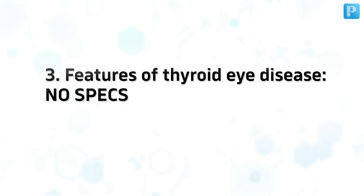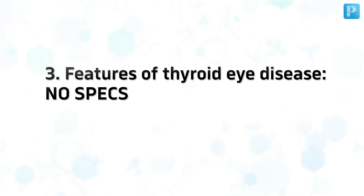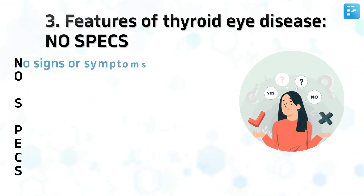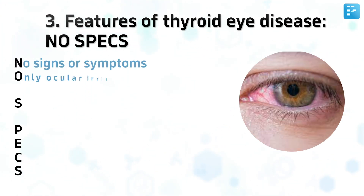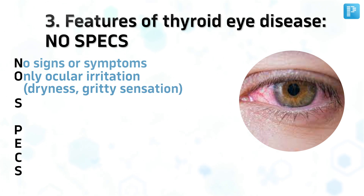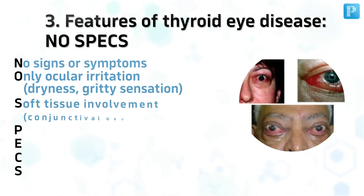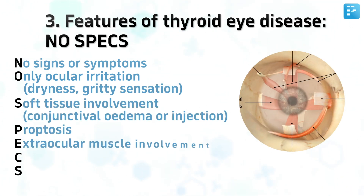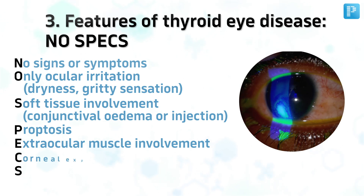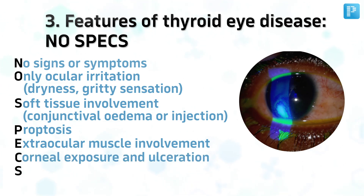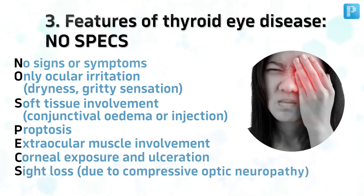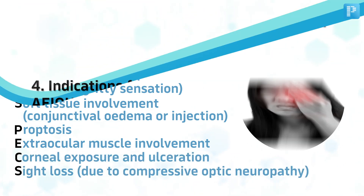Number 3. Features of Thyroid Eye Disease: NO SPECS. No Signs or Symptoms, Only Ocular Irritation, Soft Tissue Involvement, Proptosis, Extraocular Muscle Involvement, Corneal Exposure and Ulceration, Sight Loss.